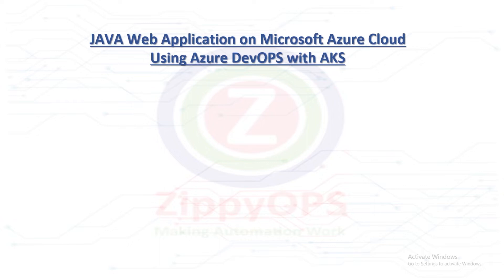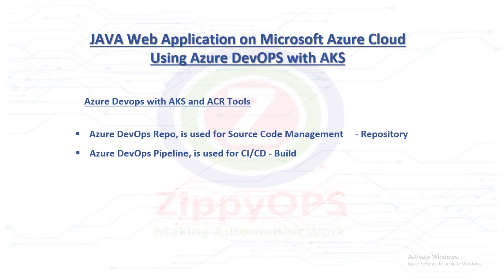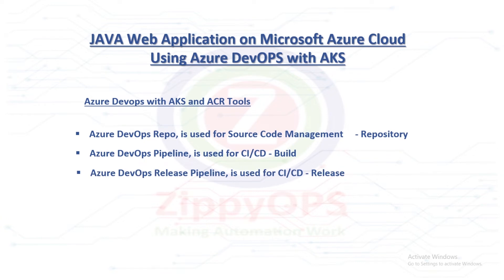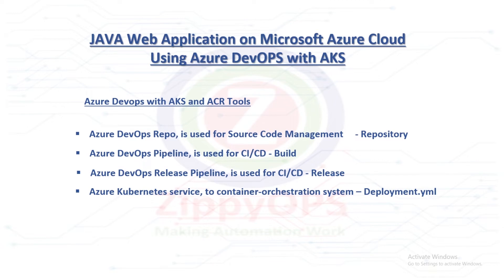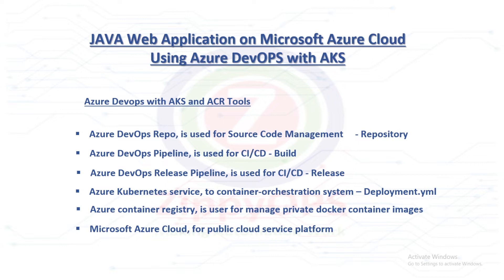The complete process is orchestrated through the Azure DevOps pipeline. The tools used in this Java application deployment are: Azure DevOps repo for source code management, Azure DevOps pipeline for continuous integration and build, Azure DevOps release pipeline for continuous deployment and release, Azure Kubernetes Service for Kubernetes container orchestration, Azure Container Registry for private registry on Docker container images, and Microsoft Azure Cloud for public cloud service platform.